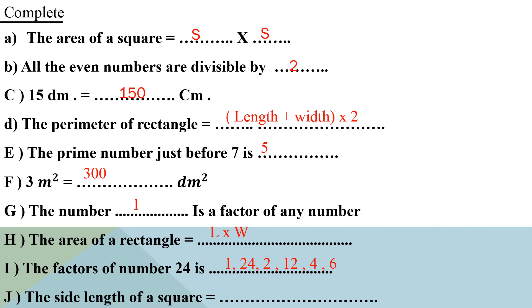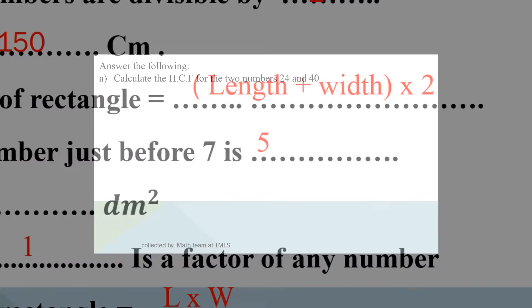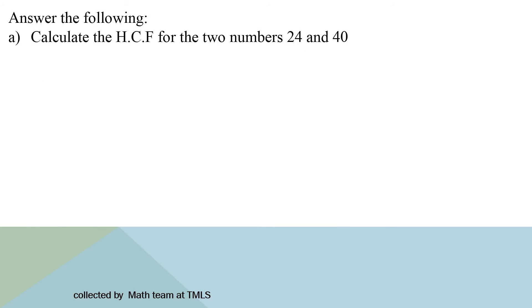Letter G: the side length of a square equals the perimeter divided by 4.